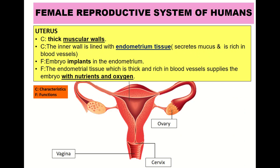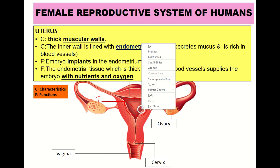Next is the structure of the uterus. The characteristic is that it has a thick, muscular wall. The inner wall is lined with endometrium tissue.